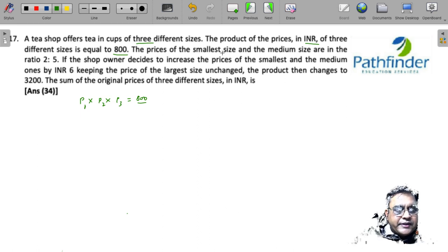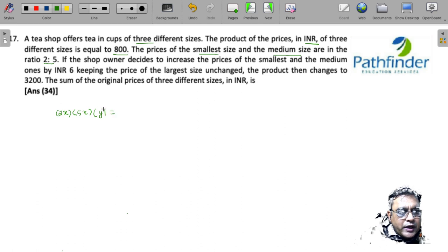The first thing you have to know: the prices of the smallest size and the medium size are in the ratio of 2 is to 5. We have been given the ratio of smallest and the medium size. Let us say the smallest is 2x, the medium is 5x, and let us say the largest is y because the ratio of the largest is not given.